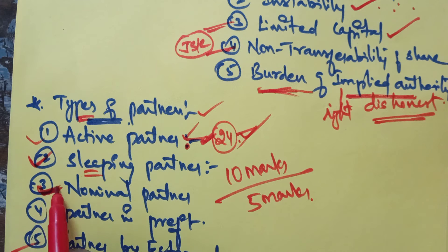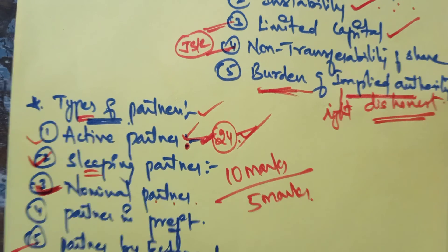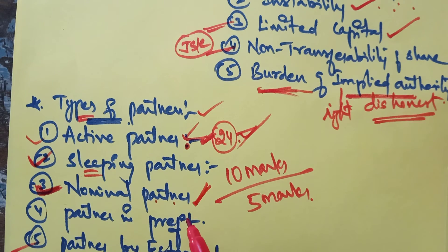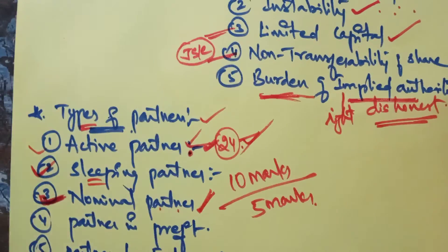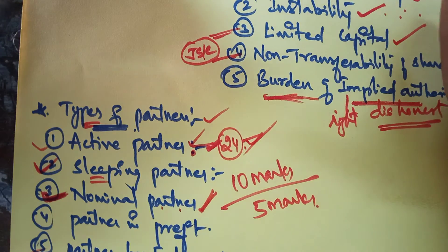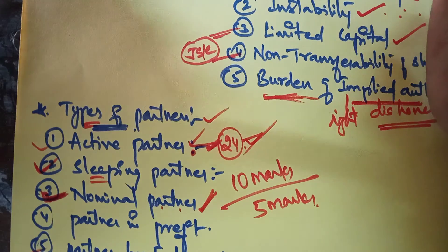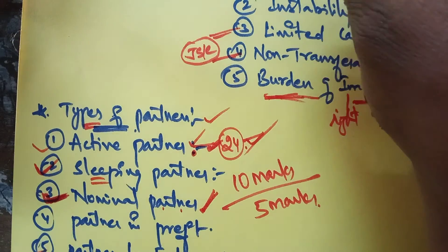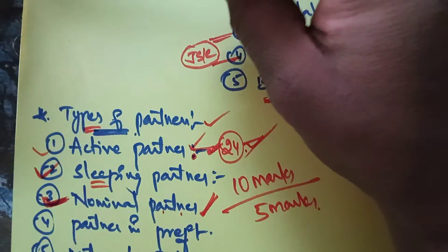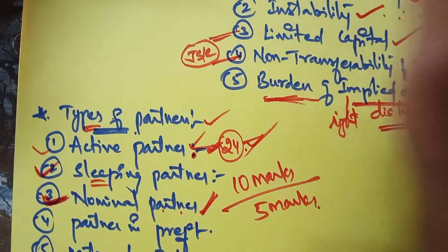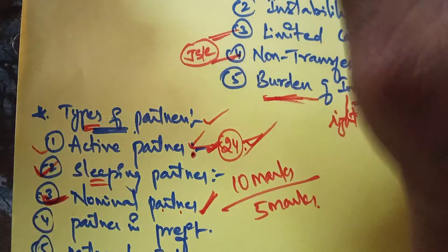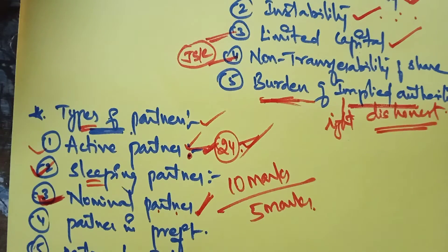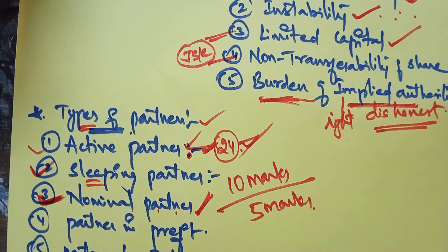A nominal partner is someone who exists in name only. He is not at all a real partner — he will not contribute capital, will not invest, and will not participate in management. A nominal partner is someone whose name is used for the benefit of the firm. For example, a celebrity's name can be taken as partner — he will not invest, but will lend his name. However, if he deals with third parties like other partners, he will be responsible to them.